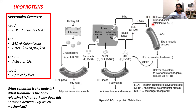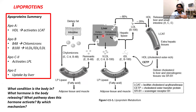So LDL represents bad cholesterol because oxidized LDL can promote formation of atherosclerotic plaques. On the other hand, HDL is synthesized by the liver and by the small intestine. It expresses ApoA, ApoC, and ApoE. ApoA is responsible for activating an enzyme called LCAT. LCAT picks up cholesterol from peripheral tissues and deposits it into HDL in the form of cholesterol esters. These cholesterol esters within HDL are delivered back to the liver. In this way, HDL picks up cholesterol from peripheral tissues and takes it back to the liver — this is why HDL is called good cholesterol.